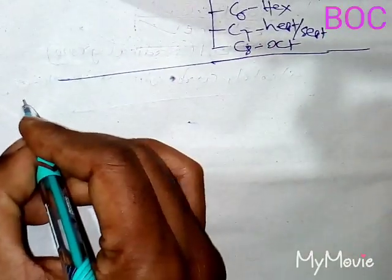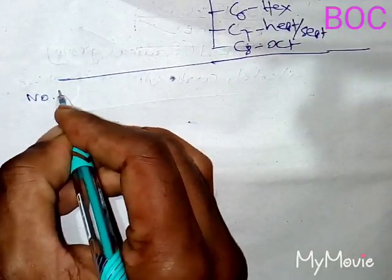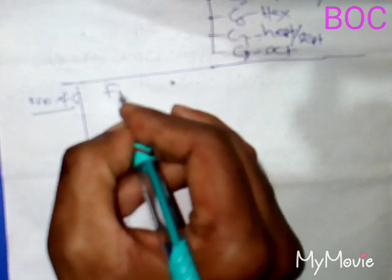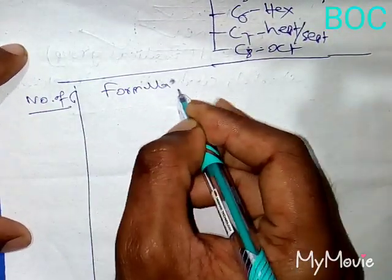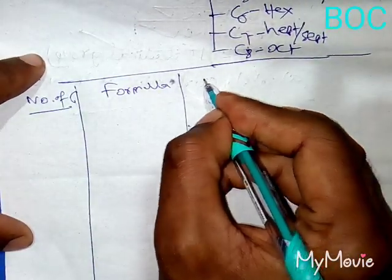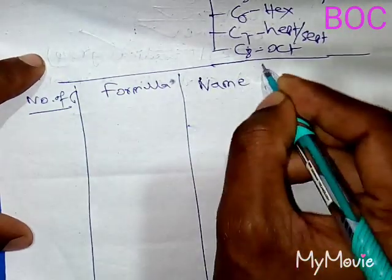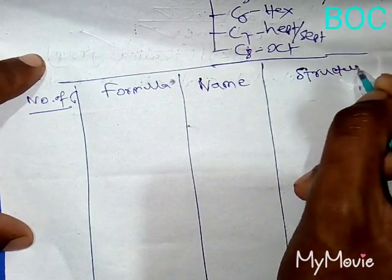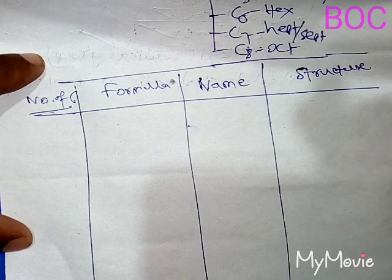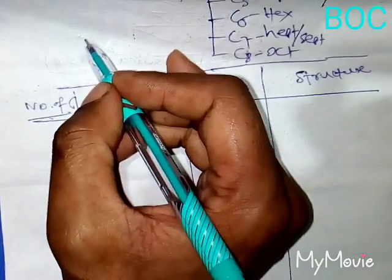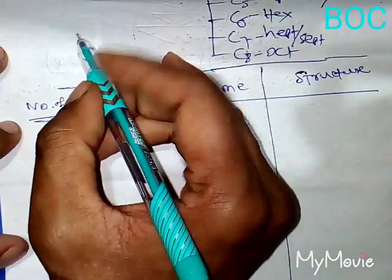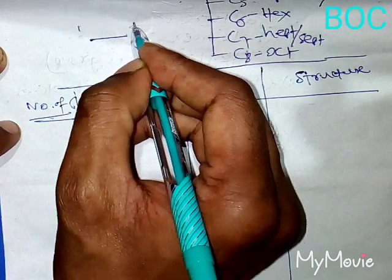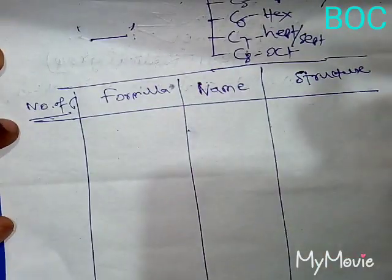Here, let us consider the table with the following heads: number of carbons, formula, naming, and structure. In the alkane group, there must be only single bonds between the carbon atoms.